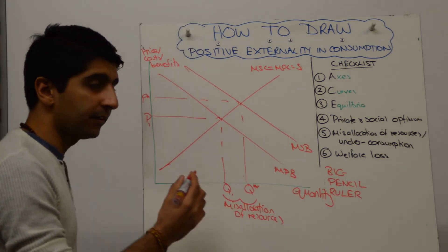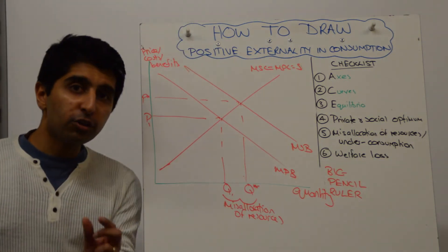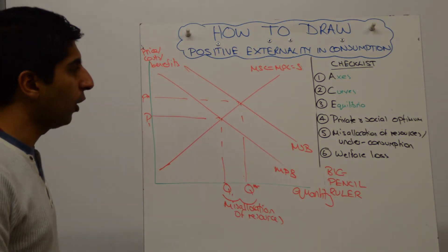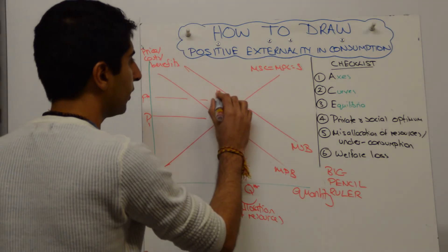Get a nice little touch of that. Examiners will like it. And then we need to show welfare loss. Now, the welfare loss is always the triangle that points towards the social optimum. And that triangle is here.